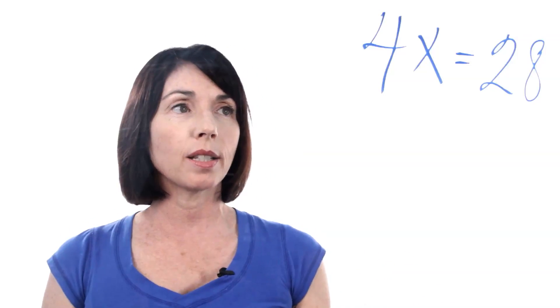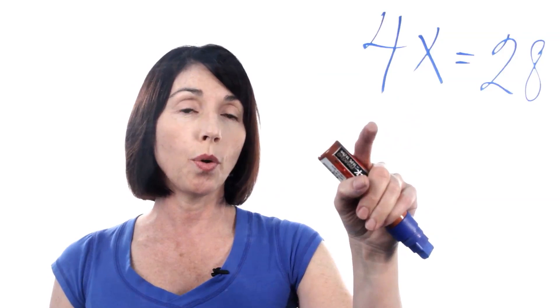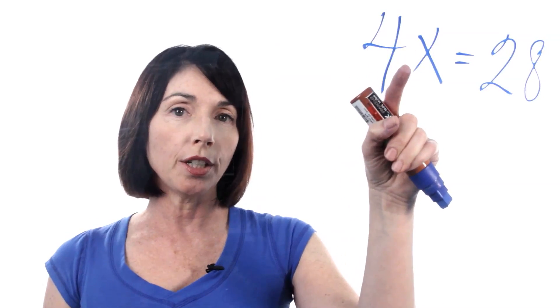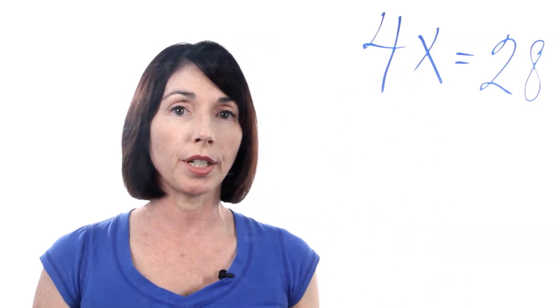Now, in this case, we're multiplying the variable x by the number 4. Since we're doing multiplication, we'll do the complementary operation, which is division.